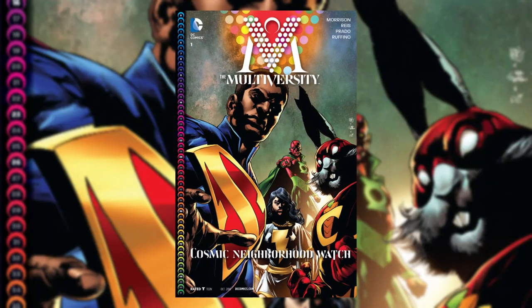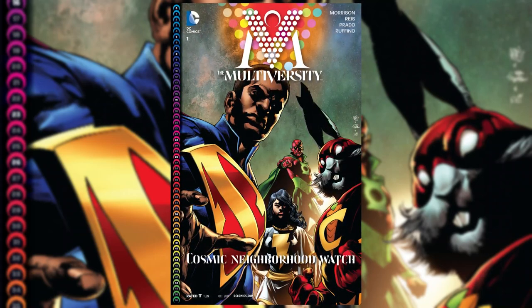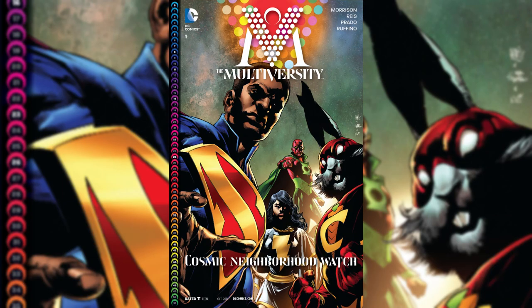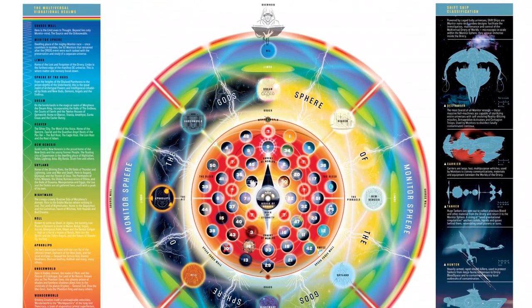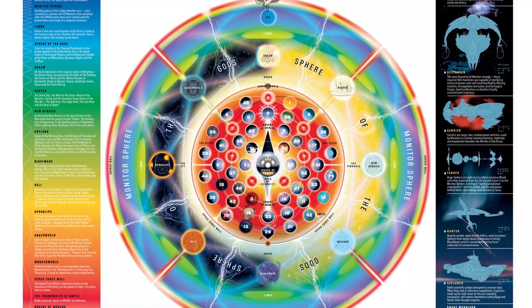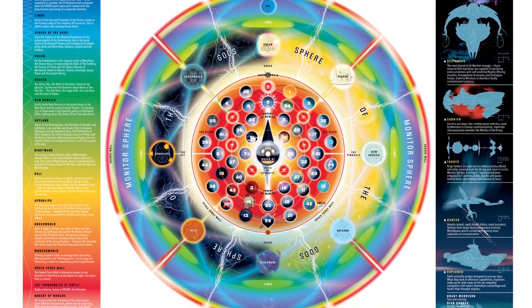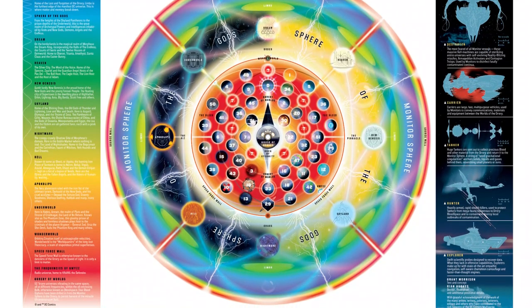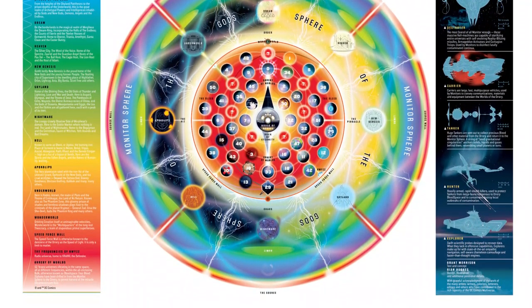It wasn't until the release of Grant Morrison's comic series Multiversity in 2014 that the map of the DC multiverse was fully revealed. Morrison, who is known for his love of metafiction and his ability to weave complex narratives, created a multiverse that was both familiar and new, expanding on concepts and characters from previous DC stories while also introducing new ones. The map offers readers a comprehensive look at the different realities and the various cosmic forces and beings that govern them.